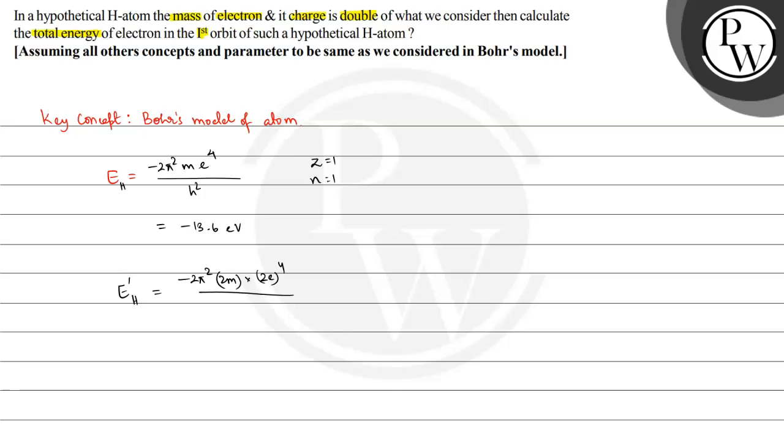2m multiplied by (2e)⁴, which means 16e⁴ divided by h². This equals 16 multiplied by 2, which is 32. So 32 multiplied by minus 2π² m e⁴ divided by h². This